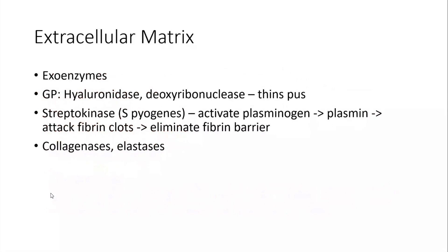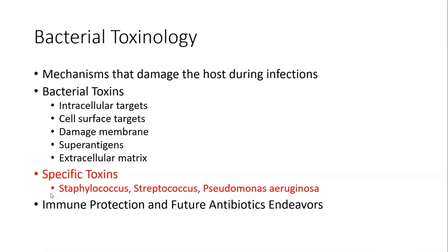Toxins released into the extracellular matrix are called exoenzymes. These include hyaluronidases, deoxyribonucleases — which thin pus in gram-positive infections — and streptokinase, which activates plasminogen leading to plasmin, which attacks fibrin clots and eliminates the fibrin barrier so bacteria can easily spread. DNA released from dead white blood cells makes that milieu very viscous, so these enzymes are essential for bacterial spread.